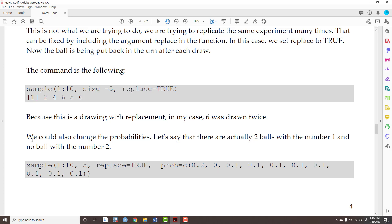Now, a parenthesis here, we could also have changed the probabilities. For instance, let's say there are actually 2 balls with the number 1 and no ball with the number 2. How would you change the command to reflect this experiment? Well, the probabilities this time are not going to be the same, so I have to specify. I am giving the probability of drawing the ball number 1, 0.2 because there are 2 of them. And I am setting the probability of drawing the number 2 to 0 because there is no number 2.